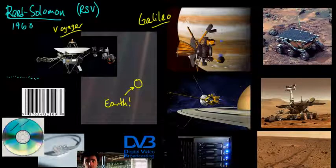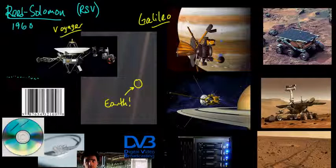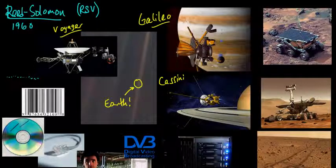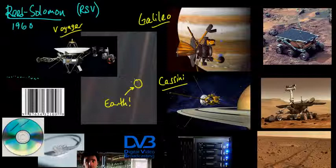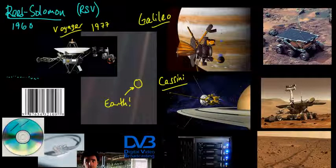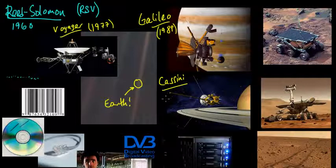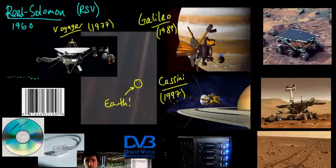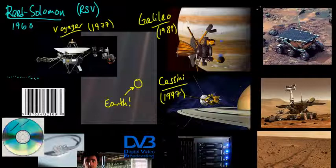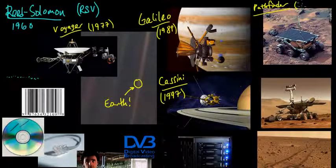Then there is Galileo — a mission to Jupiter — which also used Reed-Solomon codes. And Cassini-Huygens, a mission to Saturn, also used Reed-Solomon codes. Just to give a sense of the timelines: Voyager was launched in 1977, Galileo in 1989, Cassini in 1997. We also have the Mars missions — the Sojourner rover from the Mars Pathfinder program was launched in 1996 and also used Reed-Solomon codes.